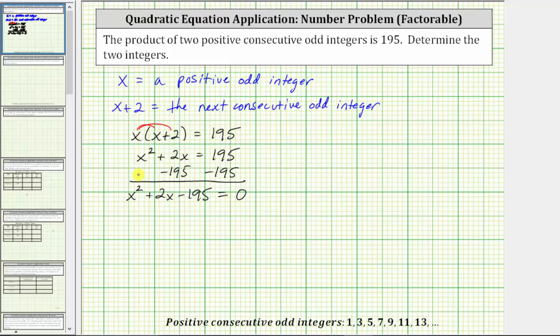If the left side of the equation does factor, it will factor into two binomial factors. Because the first term is x squared, the first term in each binomial factor is x. To determine the constants of the two binomial factors, we need to determine the factors of negative 195 that add to positive two. To help us do this, let's first determine the prime factorization of 195.